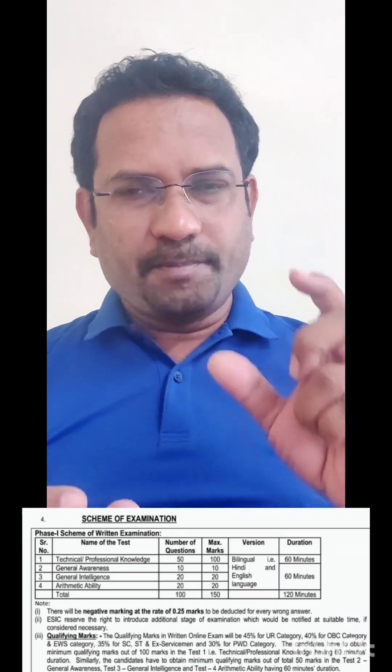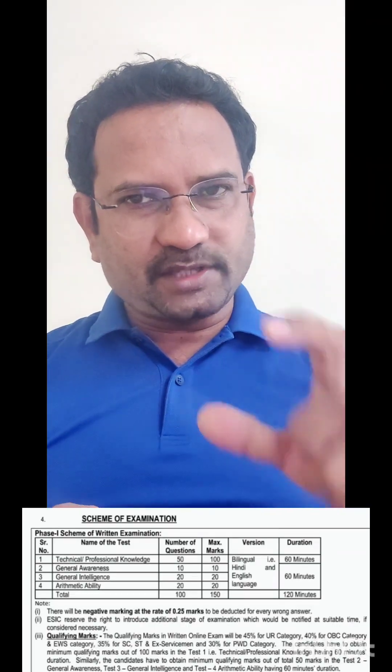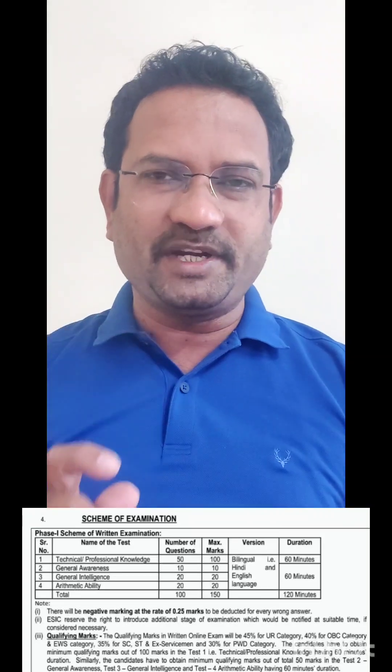Now understand the exam pattern. ESIC pharmacist exam has got two parts. Part 1 is subject knowledge pharmacy — 100 marks, 50 questions. Each question carries 2 marks. Whereas part 2 is of general intelligence, general awareness and arithmetic ability — 50 questions, 50 marks.